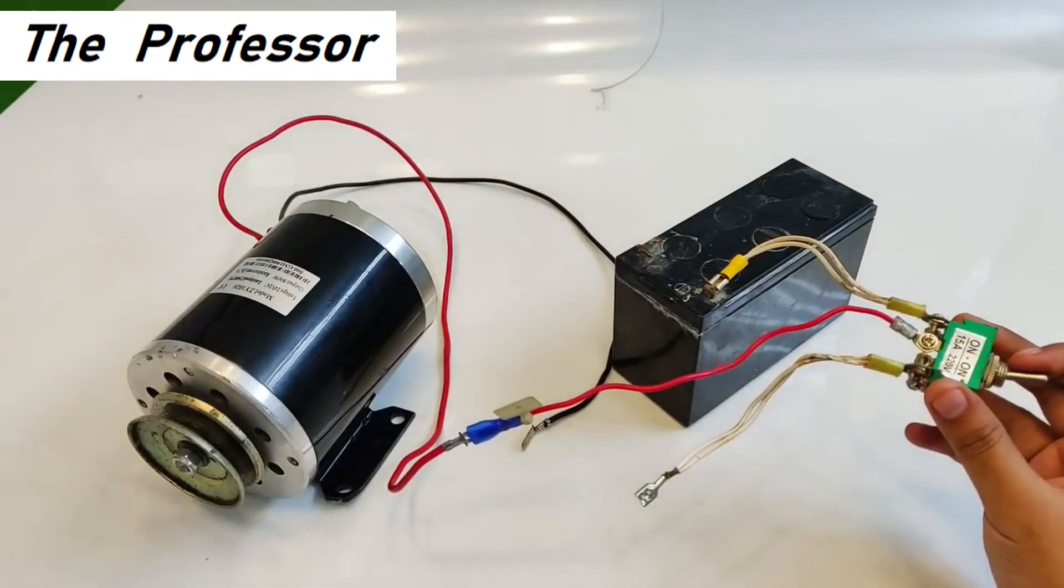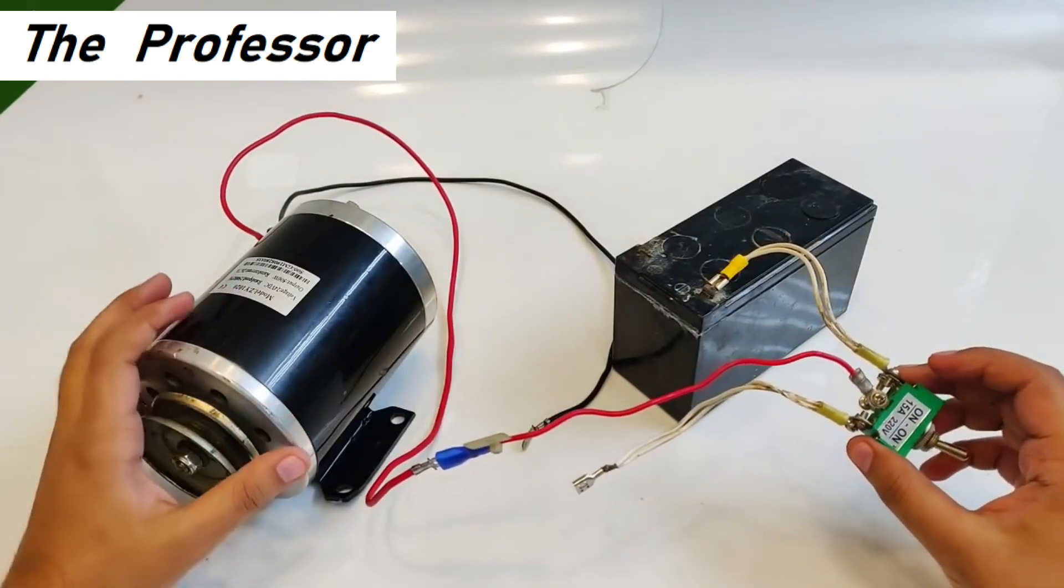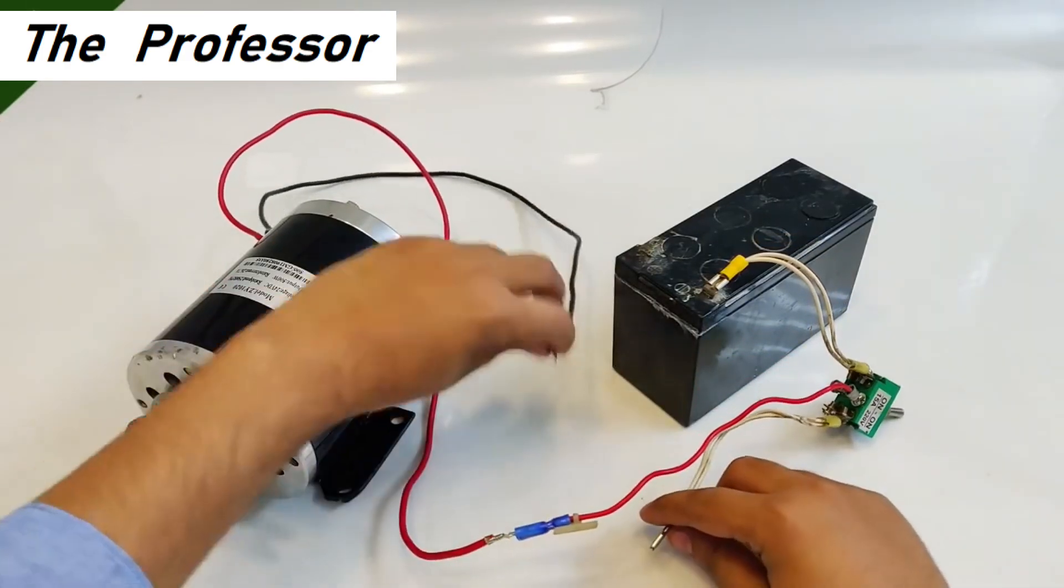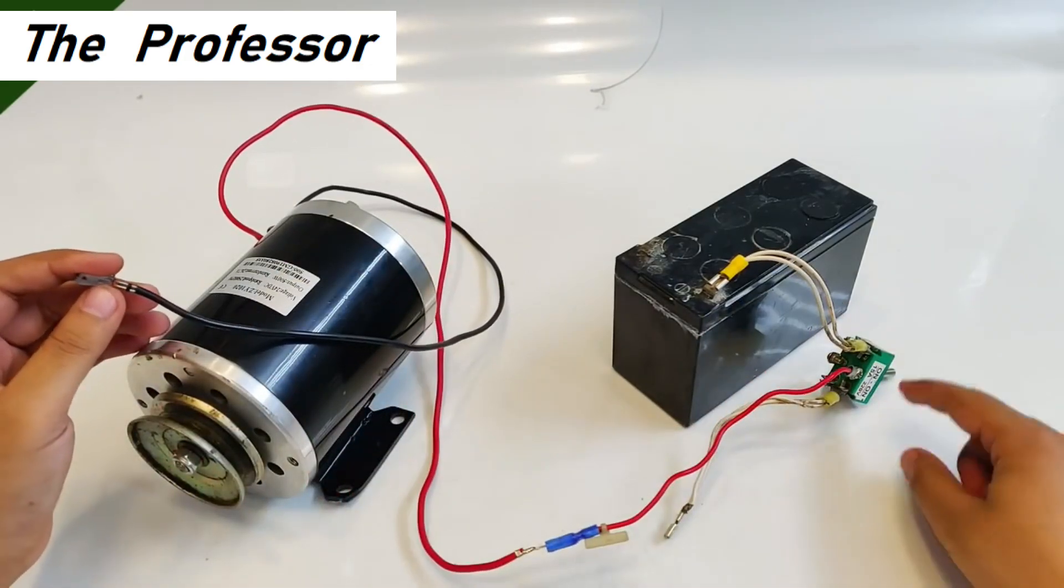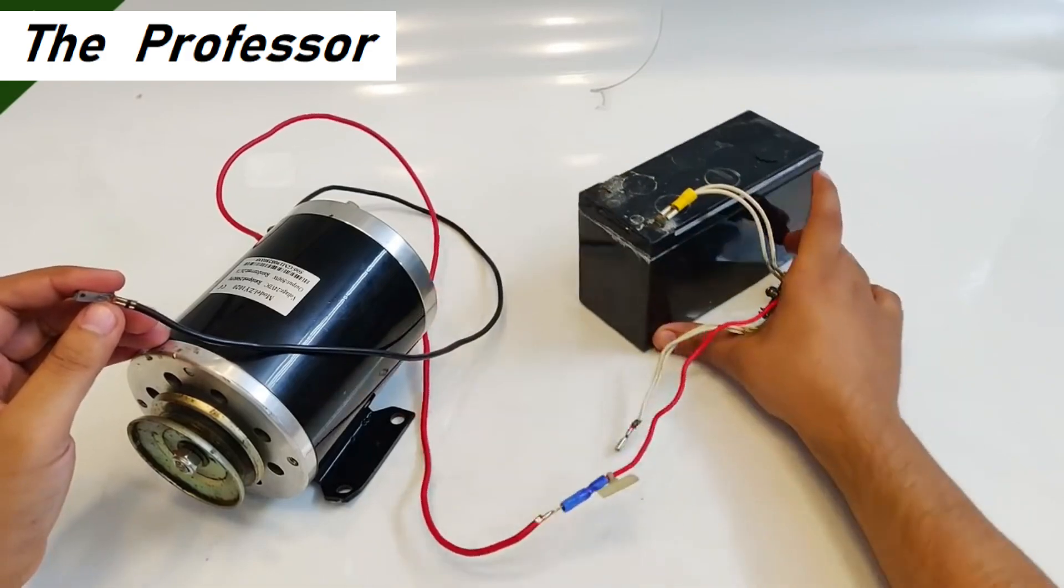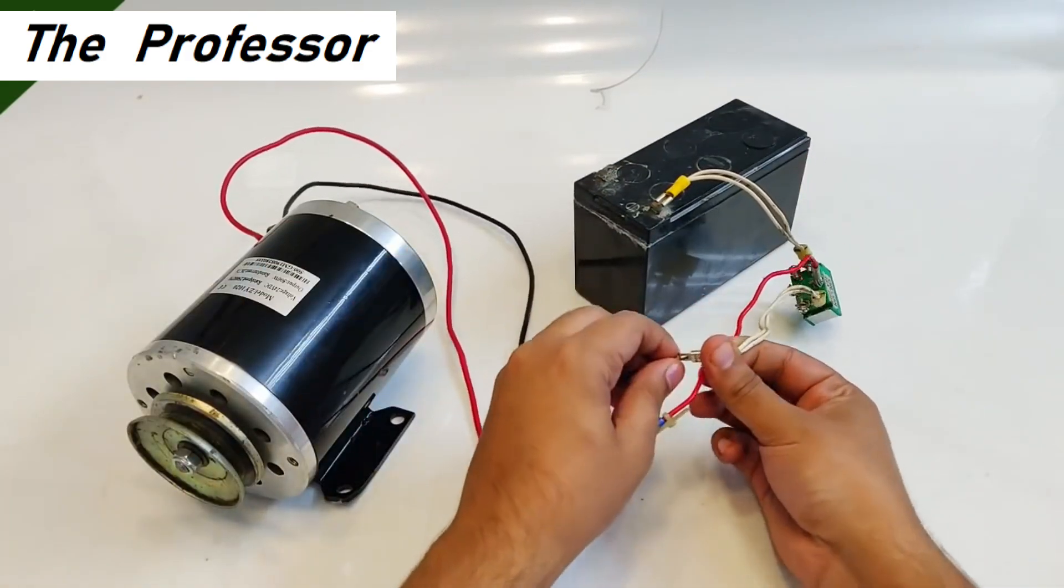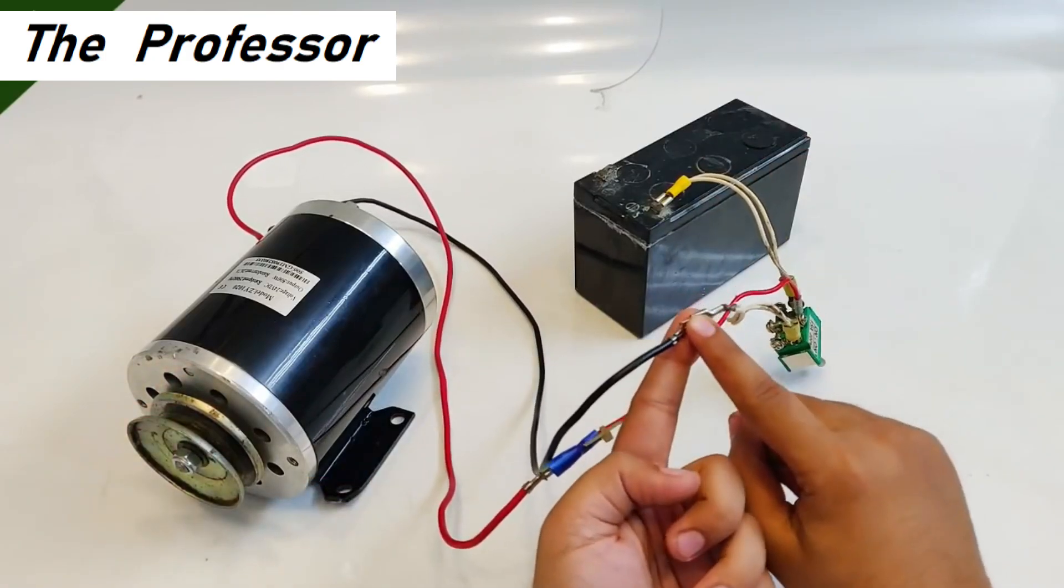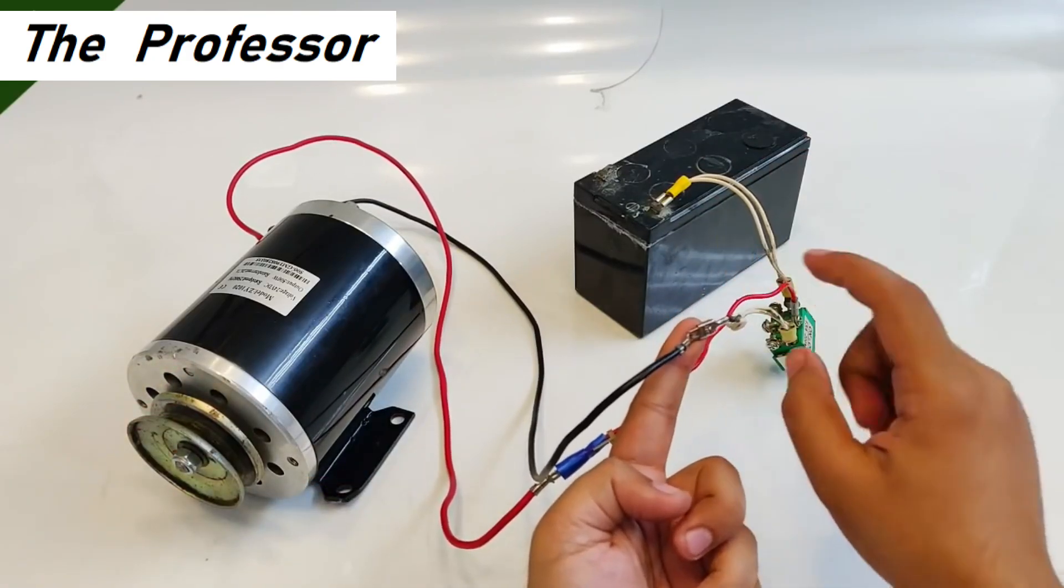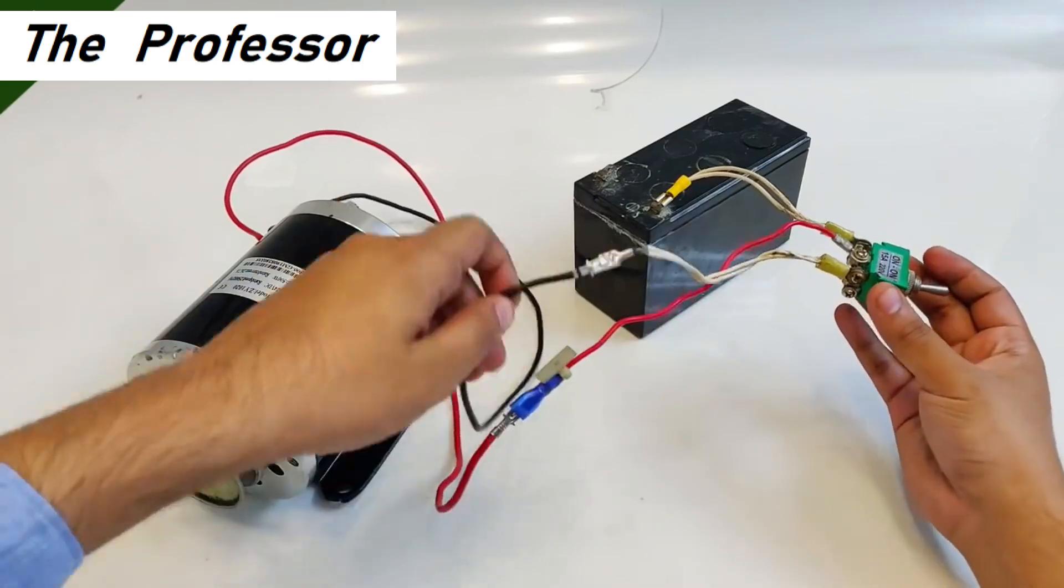Now comes the stopping part, the instant dead stopping part. For that, take the other terminal of this DC motor and the other left out terminal from the switch and connect them together like this. But one terminal from the battery has been left out. This is the tapping point which will be connected to the battery positive terminal.